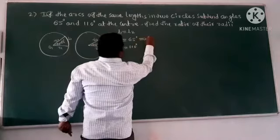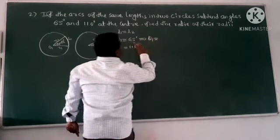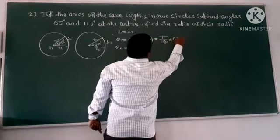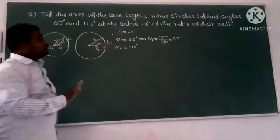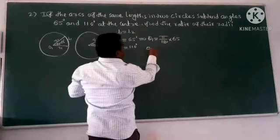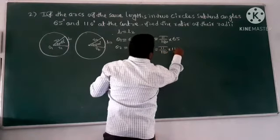The radius is equal to the radius times theta 1. So here, pi divided by 180 into 65. This is the radius. Here we go. Set theta 2, pi divided by 180 into 110.